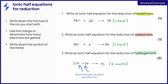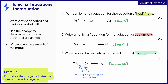This half equation would now score 2 marks. In an exam, it's easy to remember how to write a half equation for a metal ion, because the charge of the ion indicates the number of electrons gained. Now let's look at how to write ionic half equations for oxidation reactions. Remember, oxidation involves the loss of electrons. In these half equations, the electrons being lost are shown on the right-hand side of the arrow.